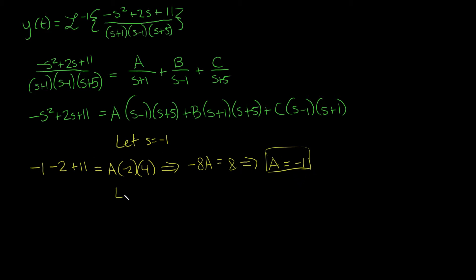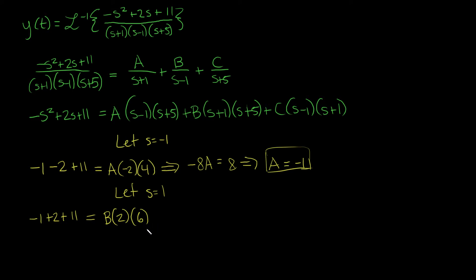Now let's let s equal positive 1, because then the a term — with s plus 1 factor — and the c term — with s minus 1 factor — both go to 0. We get negative 1 plus 2 plus 11 equals b times (1 plus 1)(1 plus 5), which is b times 2 times 6. So 12b equals 12, and therefore b equals 1.